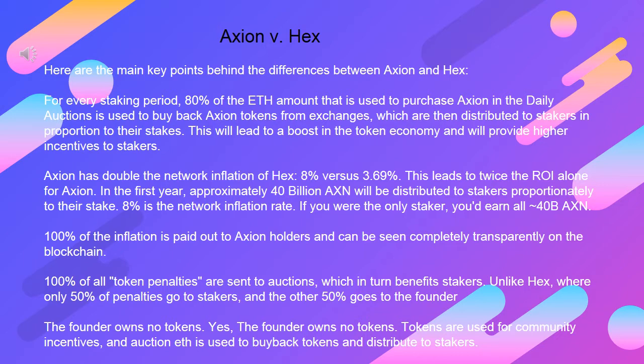For Axion, in the first year, approximately 40 billion AXN will be distributed to stakers proportionately to their stake. 8% is the network inflation rate — if you were the only staker, you'd earn all 40 billion AXN. 100% of the inflation is paid out to Axion holders and can be seen completely transparently on the blockchain.